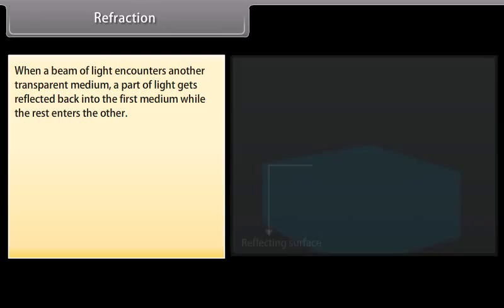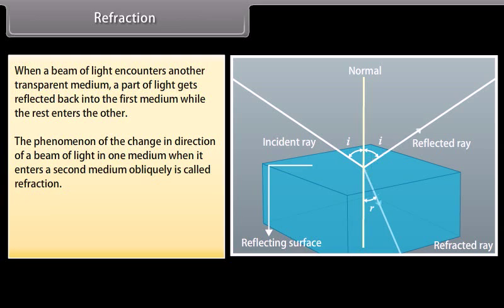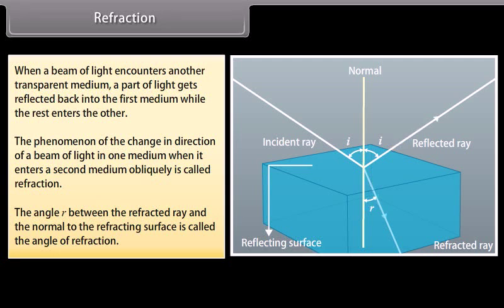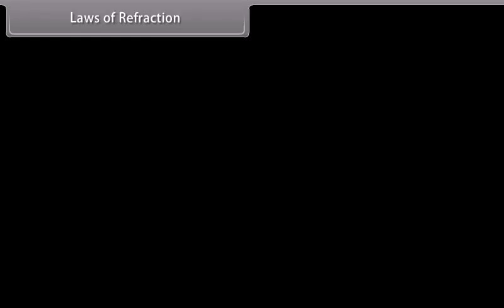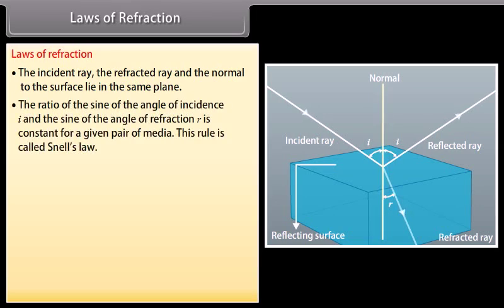Refraction: When a beam of light encounters another transparent medium, part of the light gets reflected back into the first medium while the rest enters the other. The phenomenon of the change in direction of a beam of light when it enters a second medium obliquely is called refraction. The angle R between the refracted ray and the normal to the refracting surface is called the angle of refraction. The incident ray, the refracted ray, and the normal lie in the same plane. This rule is called Snell's Law.